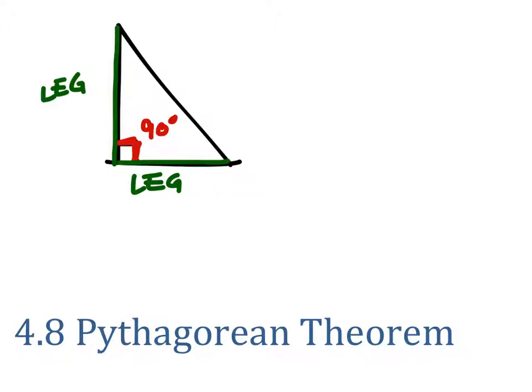Well, this 90 degree angle is kind of like it's pointing at this other side. It's always the longest side. This side opposite to the 90 degree angle is the longest side, and we have a nice name for that, the hypotenuse.